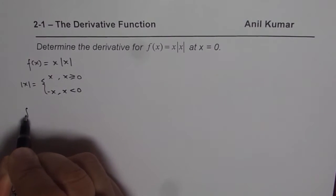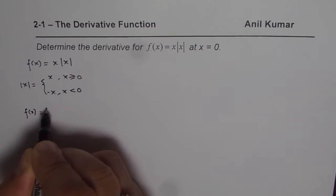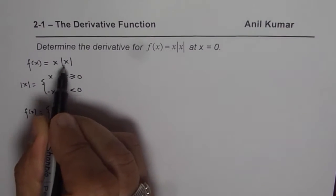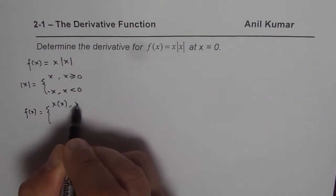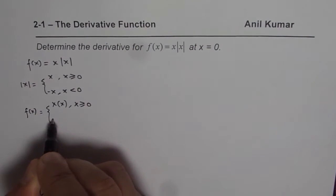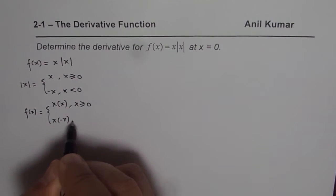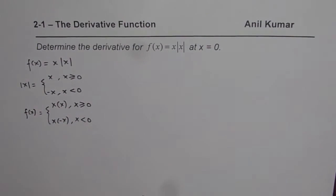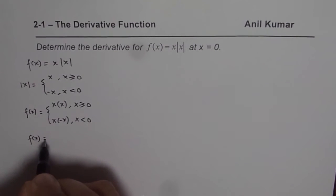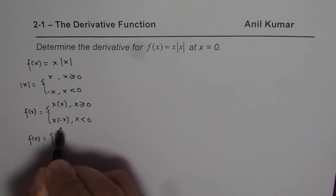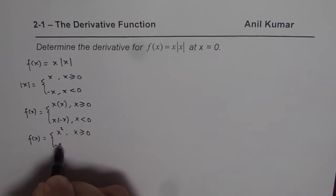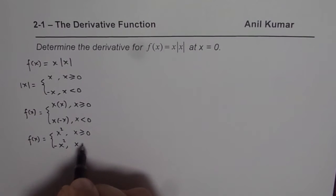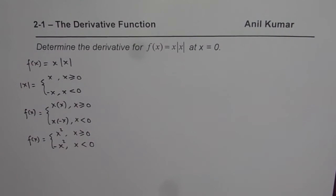Therefore, we could write the function f(x) as equal to x times x if x is greater than or equal to 0, and x times minus x if x is less than 0. So that gives us the function f(x) as equal to x² for x greater than or equal to 0, and minus x² for x less than 0. So that is how the function is.